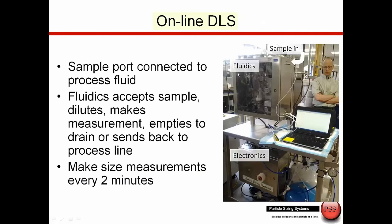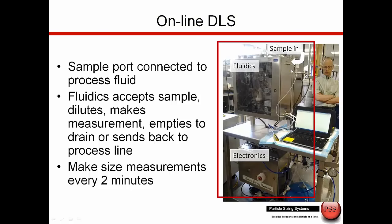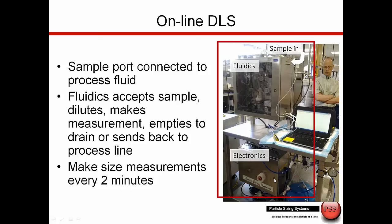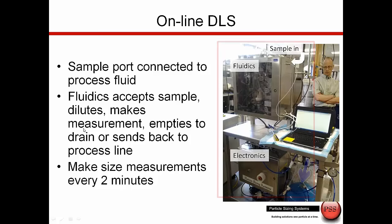This is the instrument inside the plant in Cambridge, Massachusetts — this is the online system. The sample comes in here through a quarter-inch tube from the process. Inside is the fluidics where we do the dilution. Down here we have the electronics which take care of running the instrument, and down here we have the diluent. So what we do is take in the sample, the fluidics dilutes it, we take the measurement, then we drain, clean up, and get ready for the next measurement.